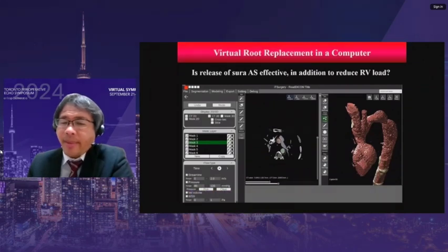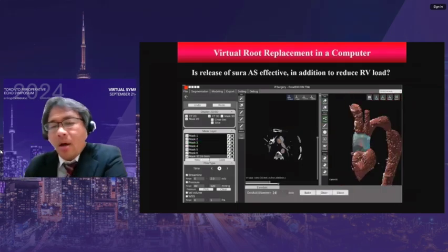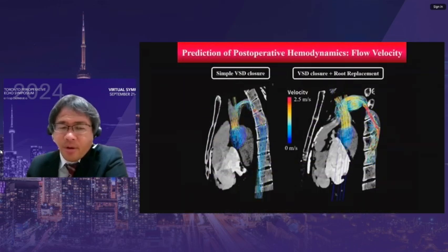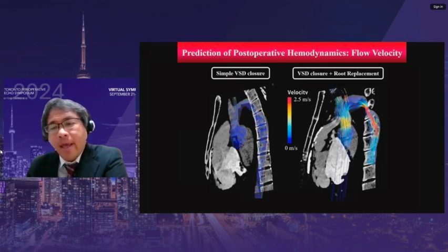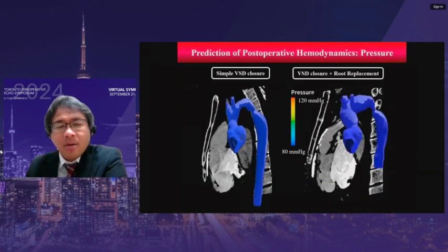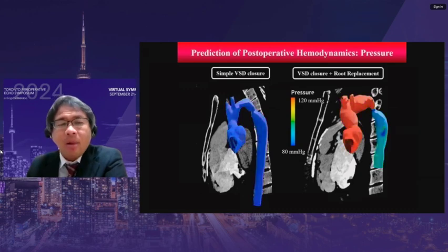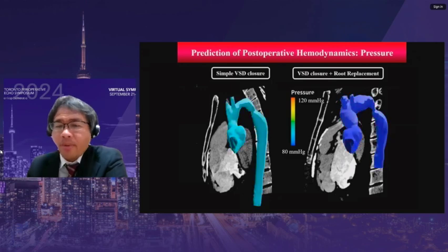To examine the effect of root replacement, I performed virtual surgery in a computer. Simple VSD closure still showed flow acceleration, which could be improved by root replacement. The pressure gradient was high with simple VSD closure alone, which also improved with root replacement.